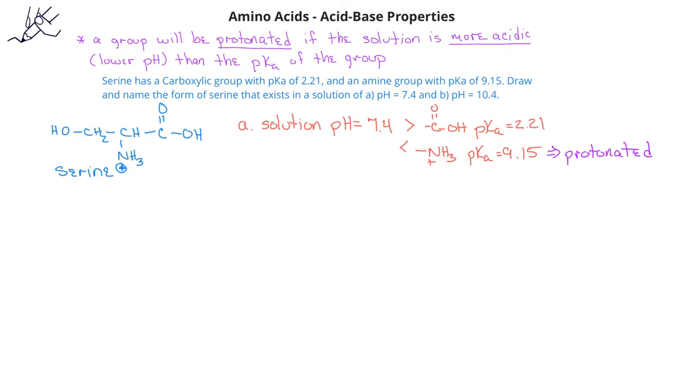On the other hand, the carboxylate group will be unprotonated or be in its negatively charged form, because its pKa of 2.21 is more acidic than the solution pH of 7.4. You should now pause the video and see if you could identify the form of serine in a solution that is pH 10.4.